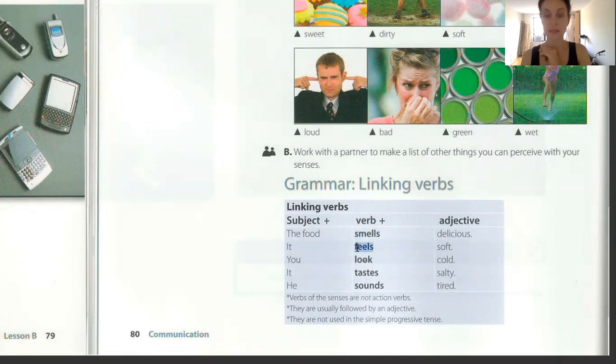It feels soft. For example, the fabric feels soft. Or the skin. The skin feels soft. That means when I touch it, I feel that it is soft. It feels soft.